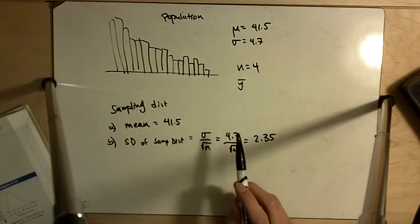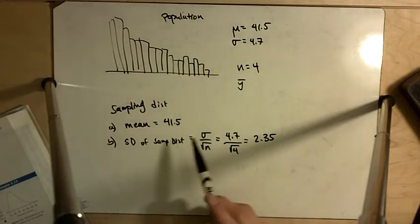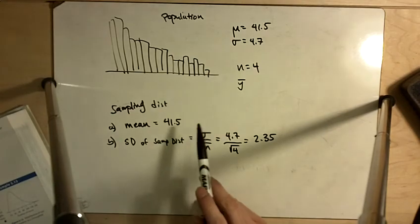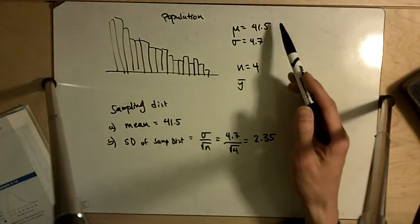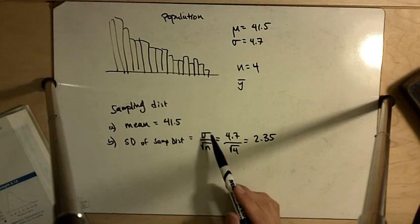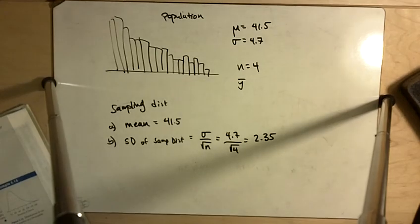But the mean and the standard deviation will have these properties where the mean is the same as the parent population and the standard deviation is going to be the parent standard deviation, sigma divided by the square root of n. That much is going to be true.